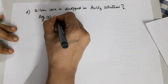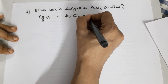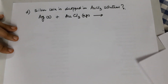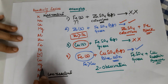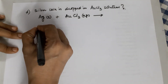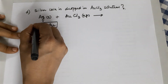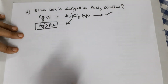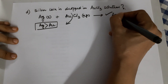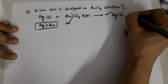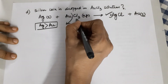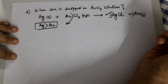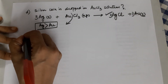What would happen if a silver coin is dropped into a gold chloride solution? Check the reactivity series — silver is more reactive than gold, so silver can displace gold. The reaction is bound to happen. The product formed would be silver chloride — silver has a valency of 1 — and gold will be separated out. Balancing the equation: you have 3 chlorines, so you need 3 silver atoms and 3 gold atoms accordingly.